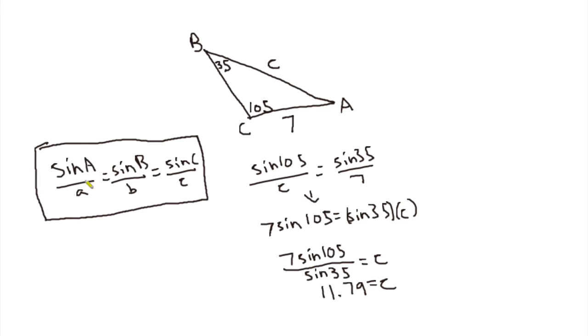So you're going to be dealing with something like sine A over A equals sine B over B, or sine B over B equals sine C over C. These are all equal to each other, but in any given problem you're just going to be working with two of them.